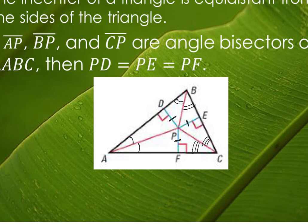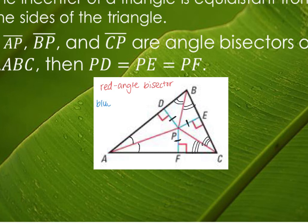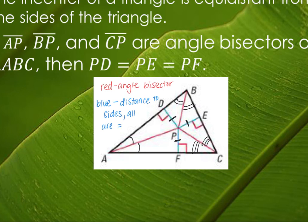Each of those red lines are your angle bisectors. The blue lines are your distance to the sides, and all are equal. So in red you have your angle bisectors, and wherever they meet, from that point the distance to each side is going to be equivalent. This is how we find our incenter.